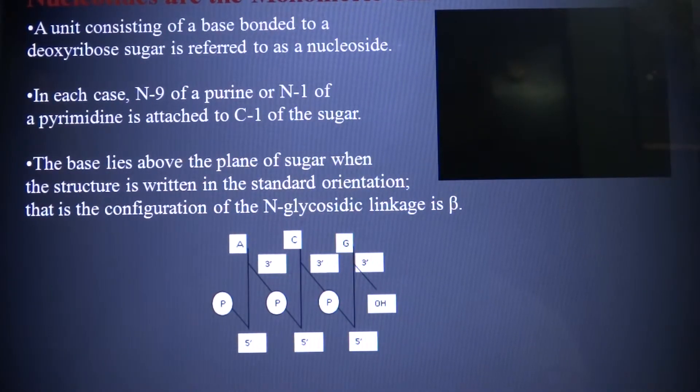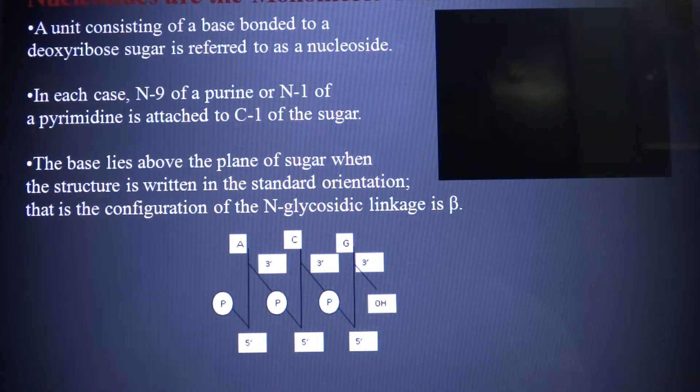A compound formed by the attachment of a phosphate group to C5 prime of a nucleoside sugar is called a nucleoside 5-phosphate or a 5 prime nucleotide.